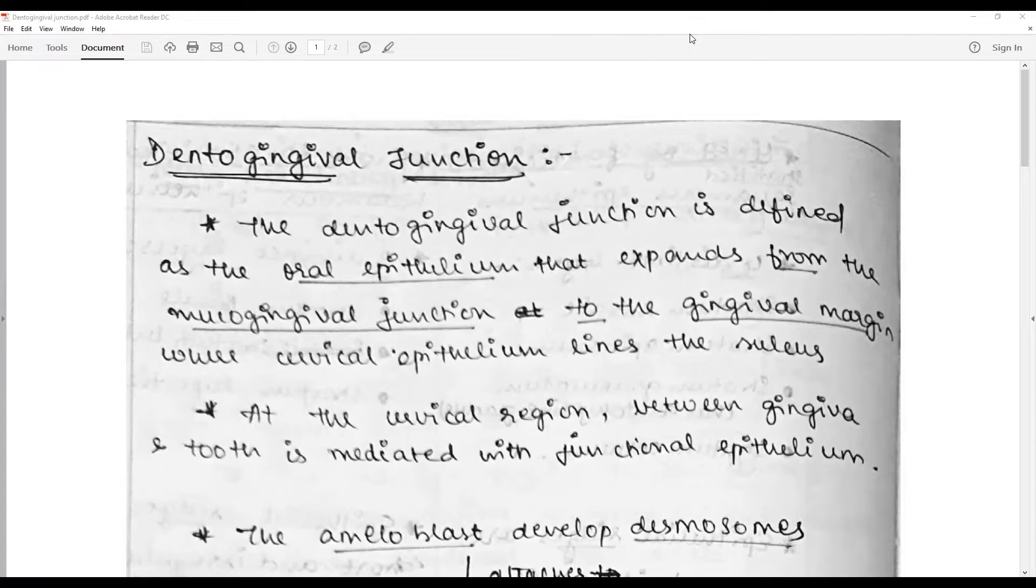extends from the muco-gingival junction to the gingival margins, where cervical epithelium lines the sulcus. At the cervical region between the gingiva and the tooth, it is mediated by the junctional epithelium.